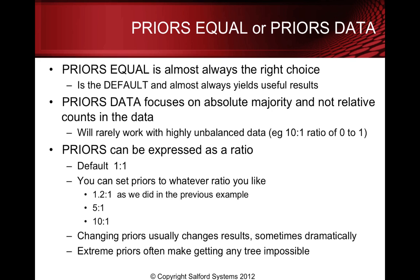It doesn't hurt to run an experiment if your dataset is not so big that it takes a long time. Priors can be expressed as a ratio, so the default will be 1 to 1. You can set the priors to whatever ratio you like, but you have to use positive numbers. You could set a ratio of 1.2 to 1, or 5 to 1, or 10 to 1, whatever you like. The first number doesn't have to be the larger one when you're setting the ratios.